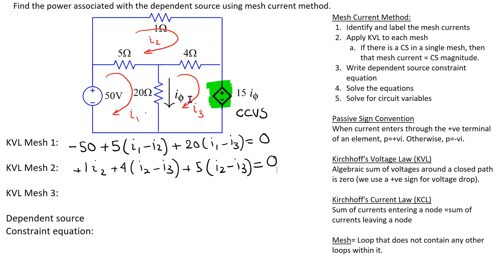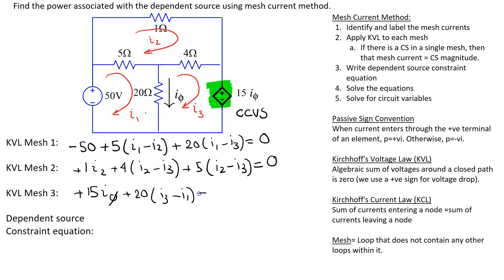Next is the third and last mesh. Starting at the dependent source, the mesh current I3 is entering the terminal marked plus and leaving the terminal marked minus. Going from plus to minus is a voltage drop, and we use a positive sign for the voltage drop, so the first term is plus 15 I phi. Moving on to the 20 ohm resistor, two currents I1 and I3 flow through it and we give priority to I3, giving 20(I3 minus I1). Then 4(I3 minus I2) equals 0. This completes the process of applying Kirchhoff's voltage law to the three meshes.